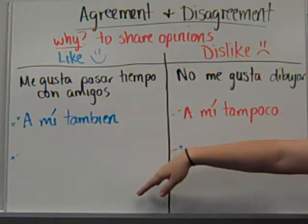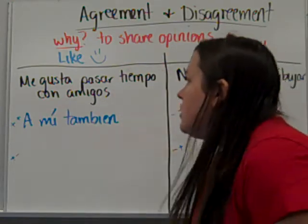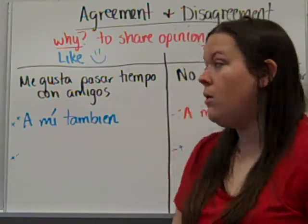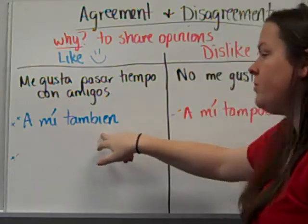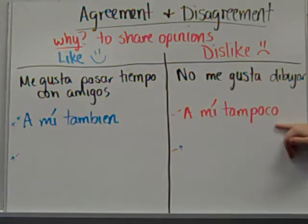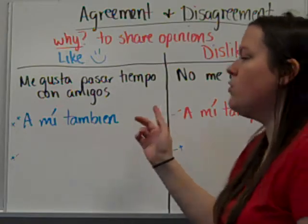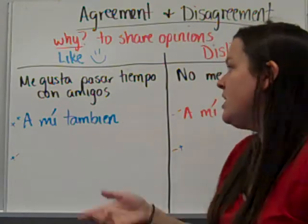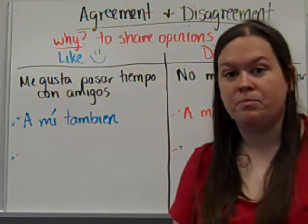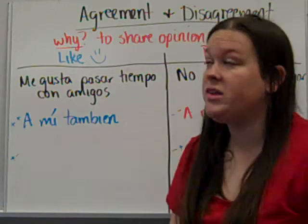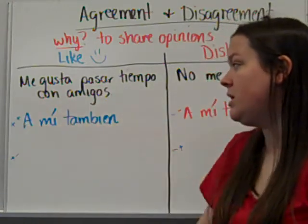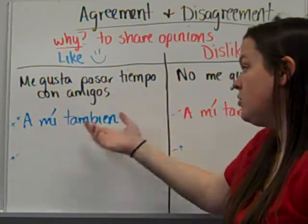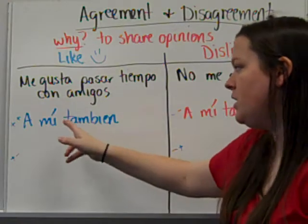We've got two sides: liking something and not liking something. So we're going to cover the like side first. The terms you need to know for this video are 'a mí también' and 'a mí tampoco.' Over here, 'me gusta pasar tiempo con amigos' — person one has stated, 'I like to spend time with friends.' They're stating a positive opinion that they like something. And you're also going to state a positive opinion — you agree with them. So: 'I like to spend time with friends, me too,' or 'me as well,' 'me also' — 'a mí también.'